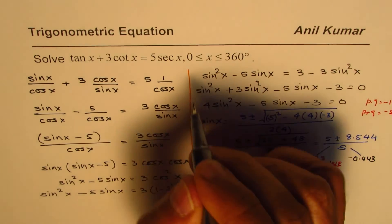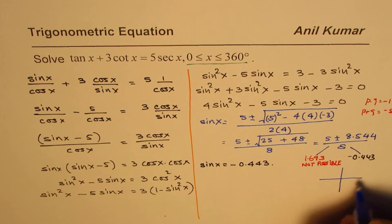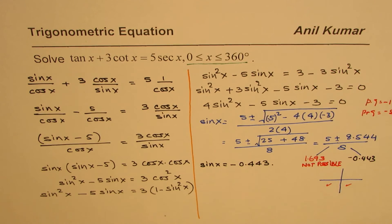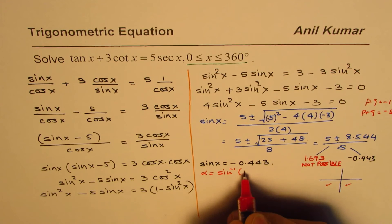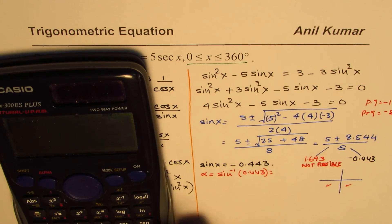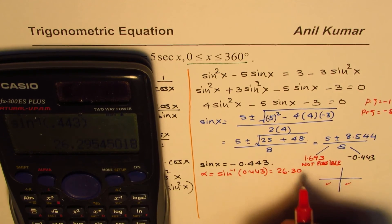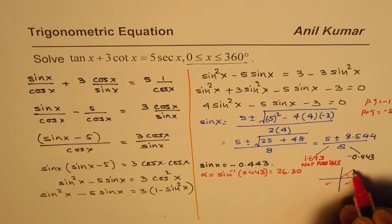We need to find all values of x within the domain 0 to 360 degrees. Since sine is negative, solutions lie in quadrants 3 and 4. We first find the acute reference angle alpha, which is sin⁻¹(0.443). Using a calculator, alpha equals approximately 26.3 degrees.